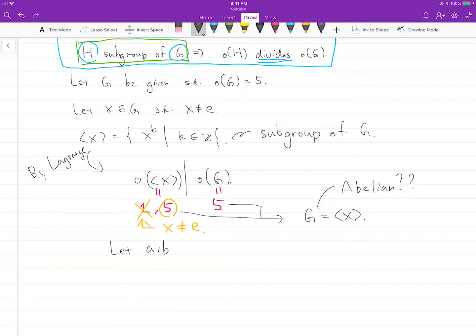For that, we can take two elements in G, and if we can show that AB equals BA, we're done.